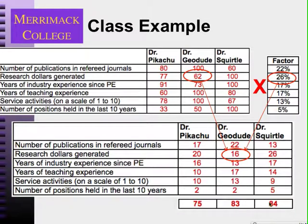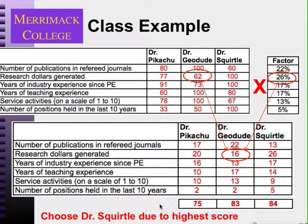We would choose the third alternative, Dr. Squirtle, because he gets the highest total weighted score. And that's it.